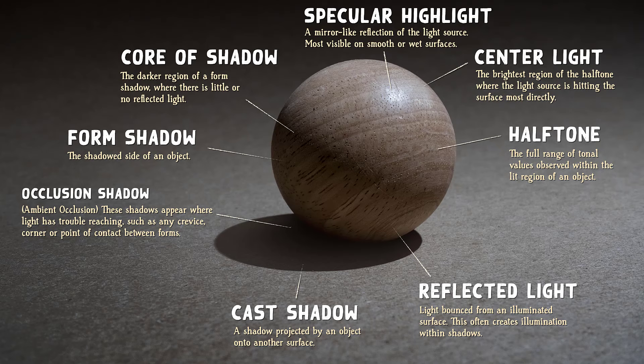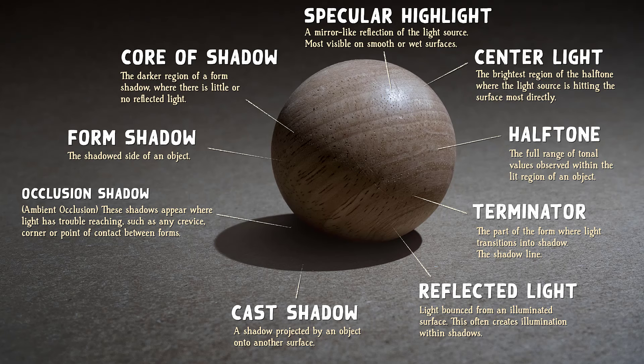Often it's a good idea to downplay these reflections so that your shadows remain cohesive. The shadow line is technically called the terminator. You will typically see the most pronounced texture along this transition from light to shadow, because the raking light makes uneven surfaces stand out dramatically against shadow. Lastly, the softening edge of a cast shadow is known as the penumbra. The further a cast shadow edge is from the base of the object casting it, the softer it will become as light and shadow mix.